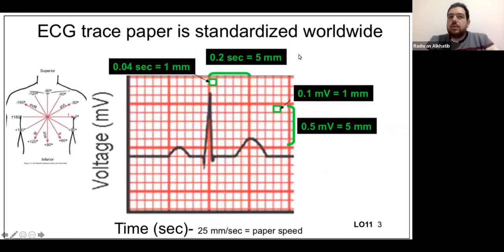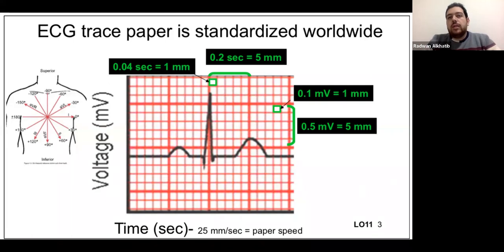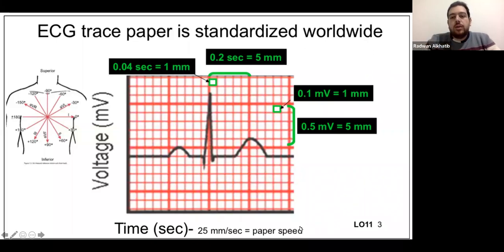The second question is why is ECG paper standardized? Because a cardiologist should be able to read an ECG printed in Germany the same way as one printed in the US. You cannot have different rules for small and large boxes — everything must be standardized. Memorizing these numbers will make your life much easier when you calculate heart rate and axis.